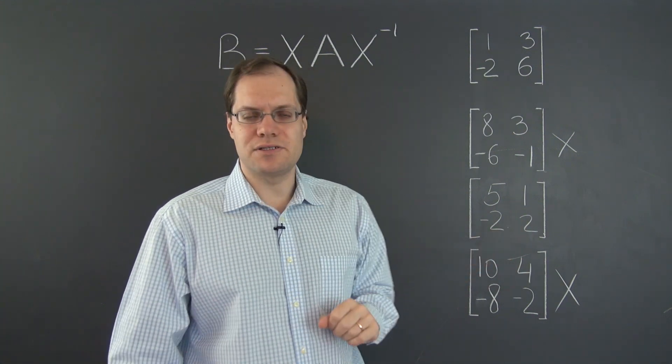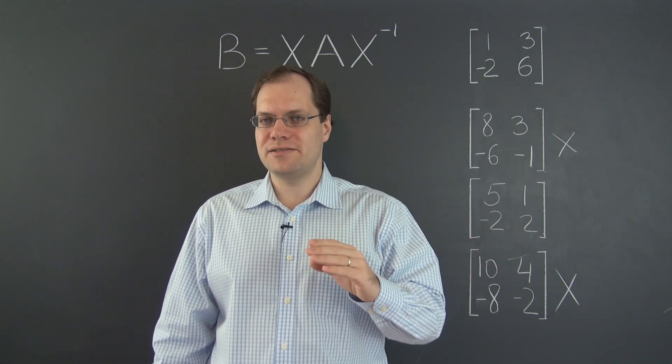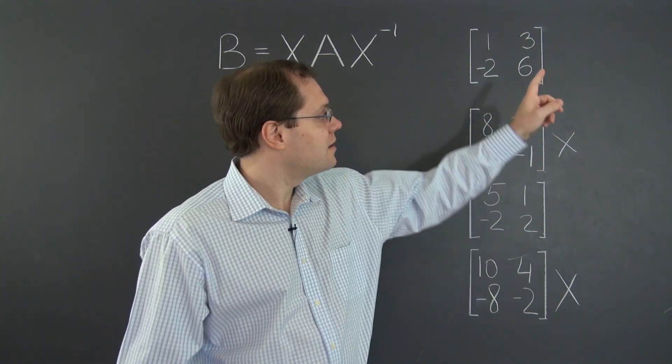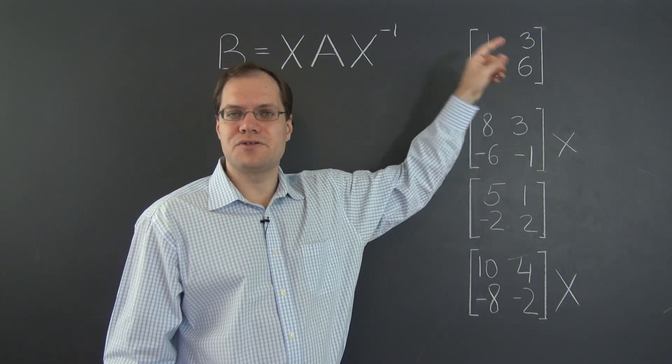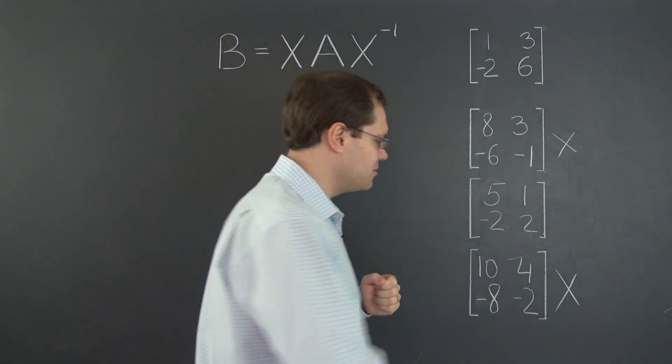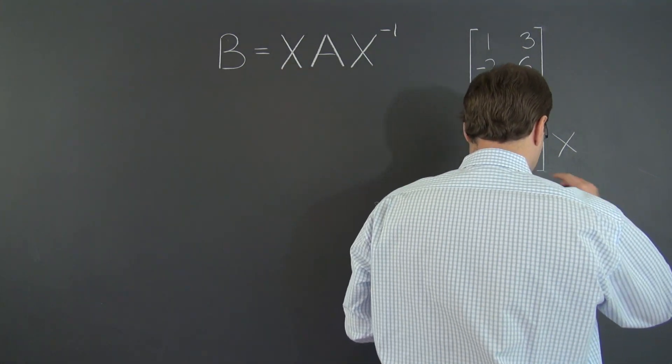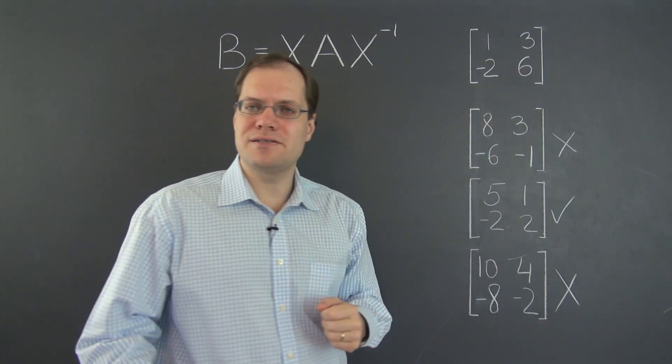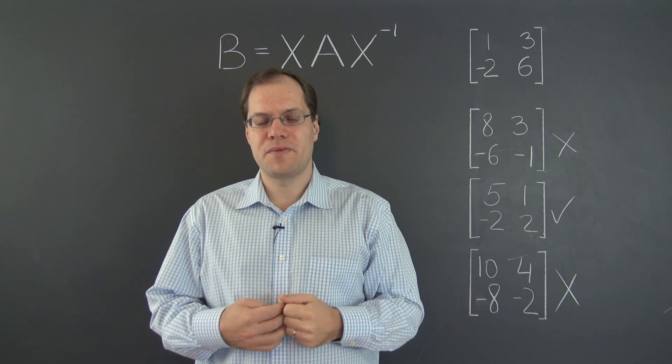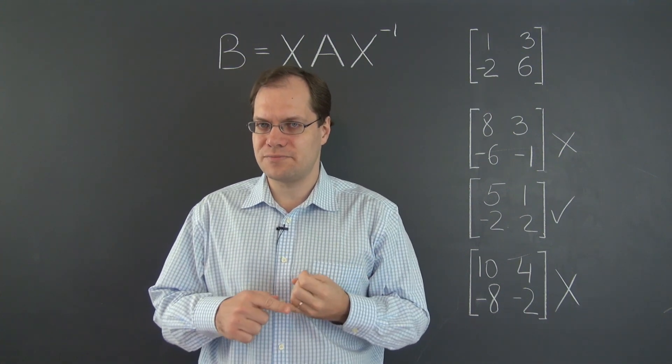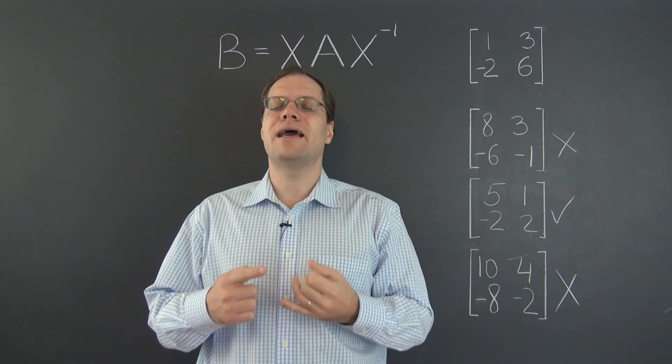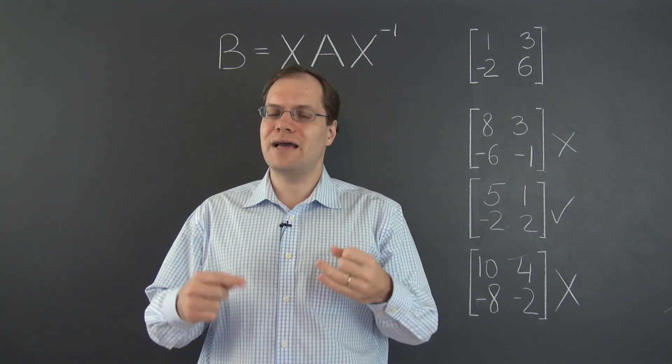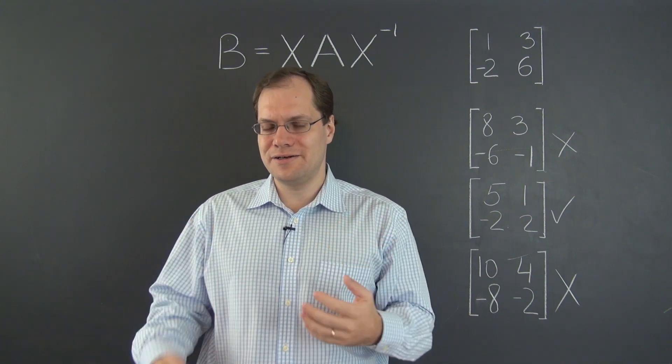So it doesn't rule out this matrix. In fact, this matrix has the same trace and the same determinant as this matrix. So it's a very legitimate candidate. I would even put a checkmark next to it. And that brings us to an interesting question. Now that we have discovered that they have the same trace and determinant, can we conclude that they actually are related by a similarity transformation?